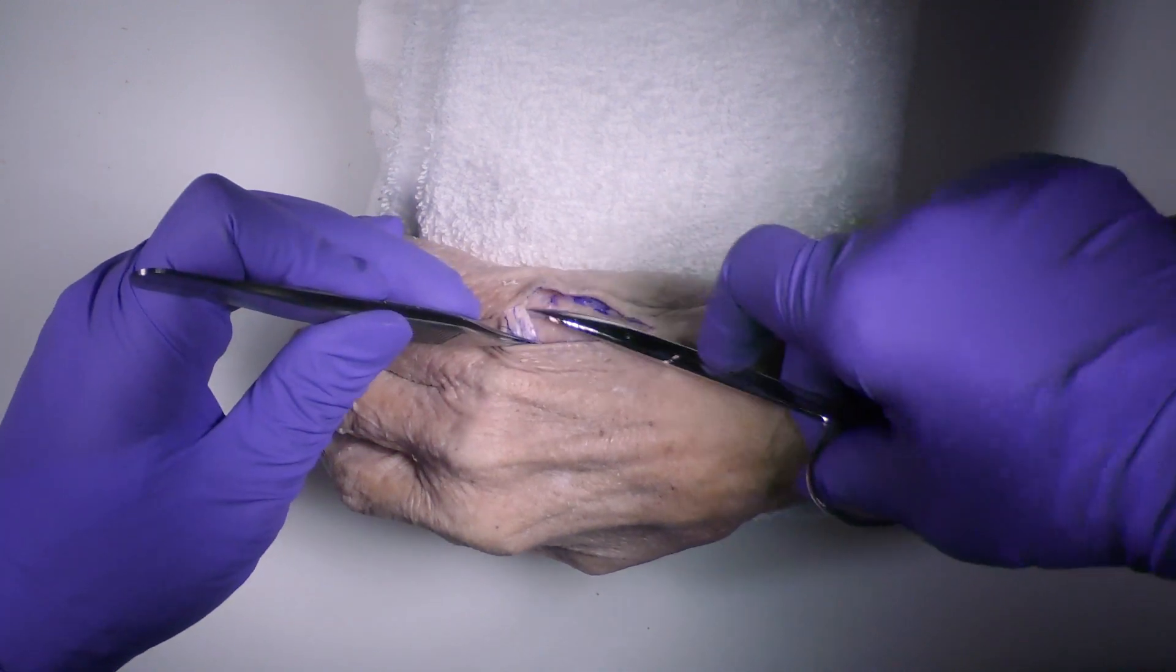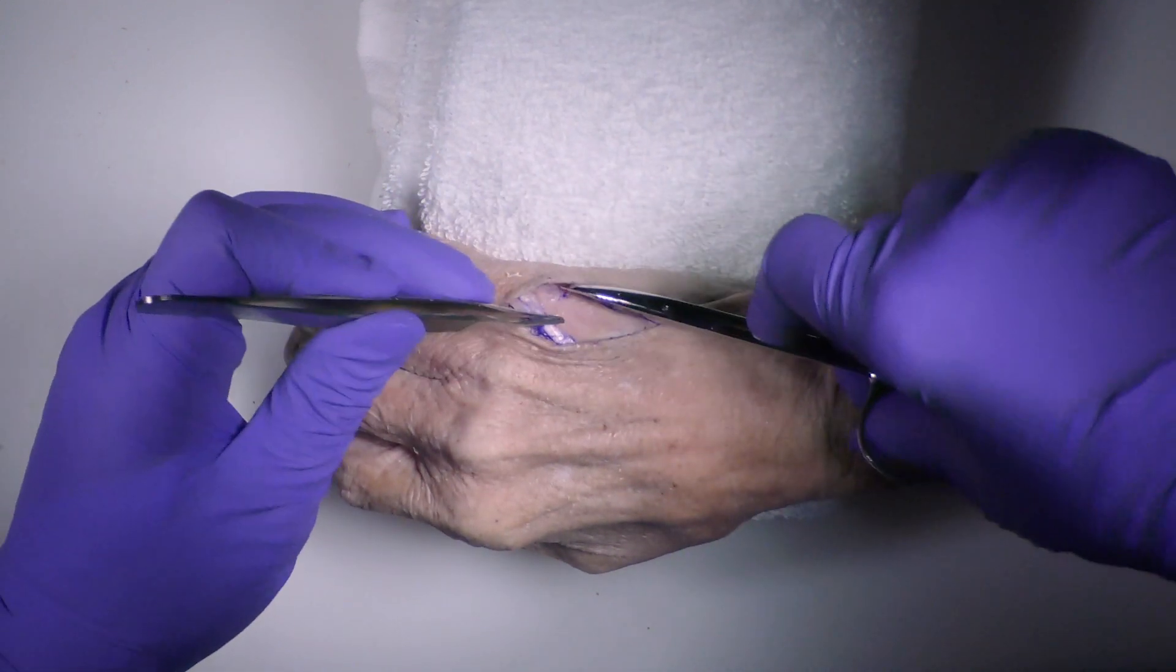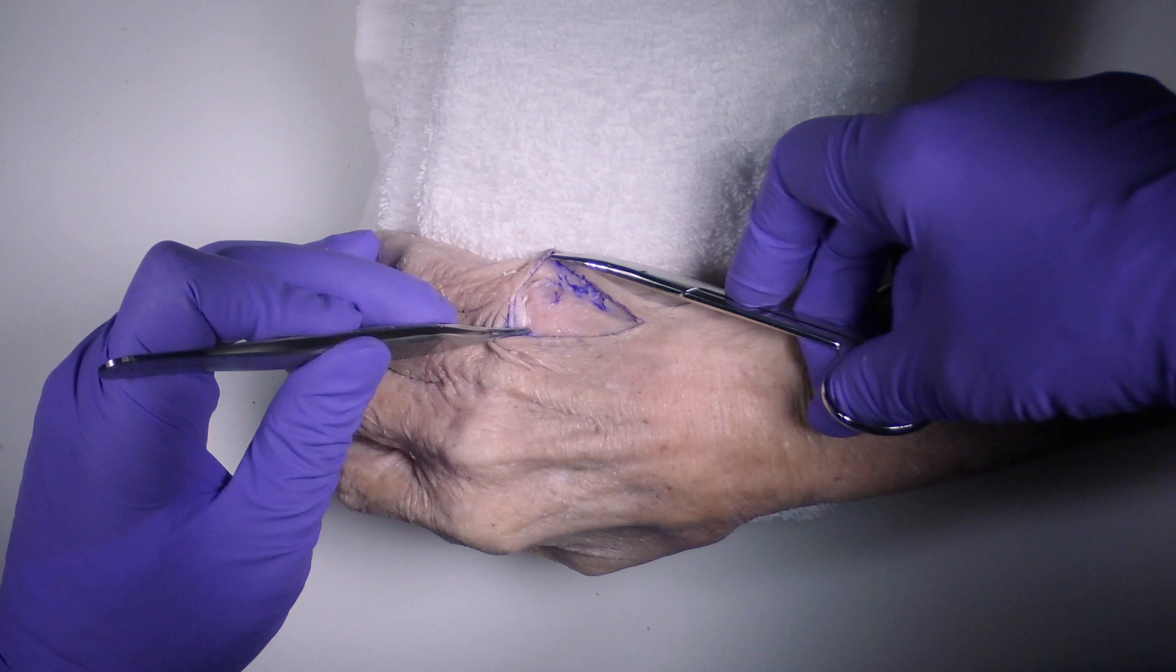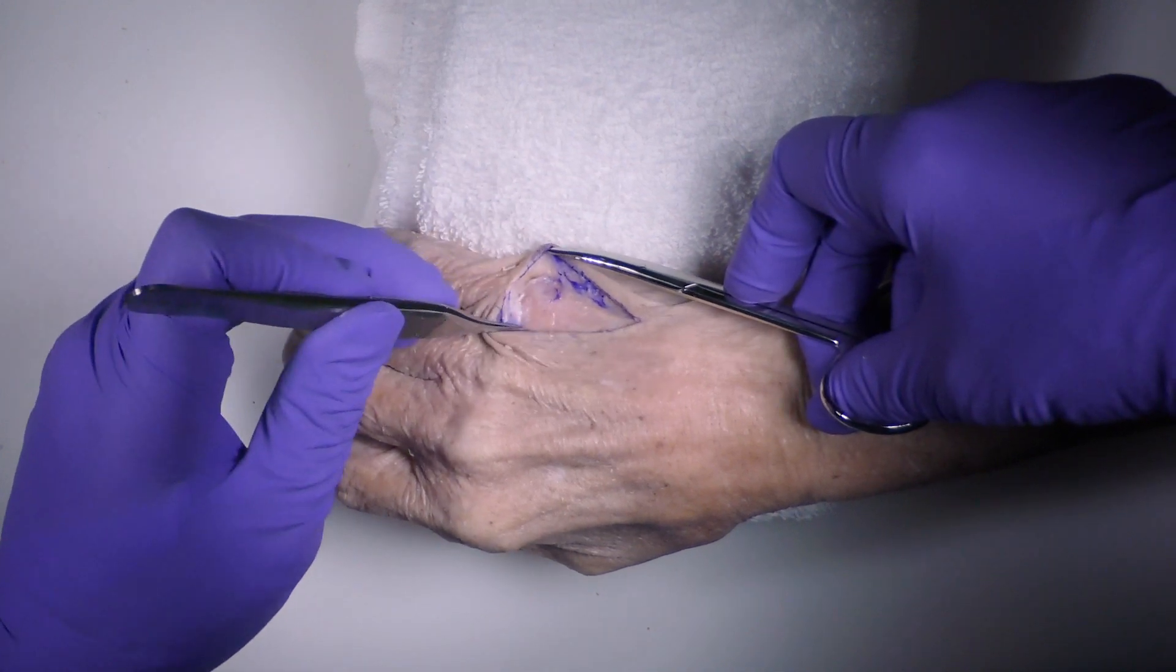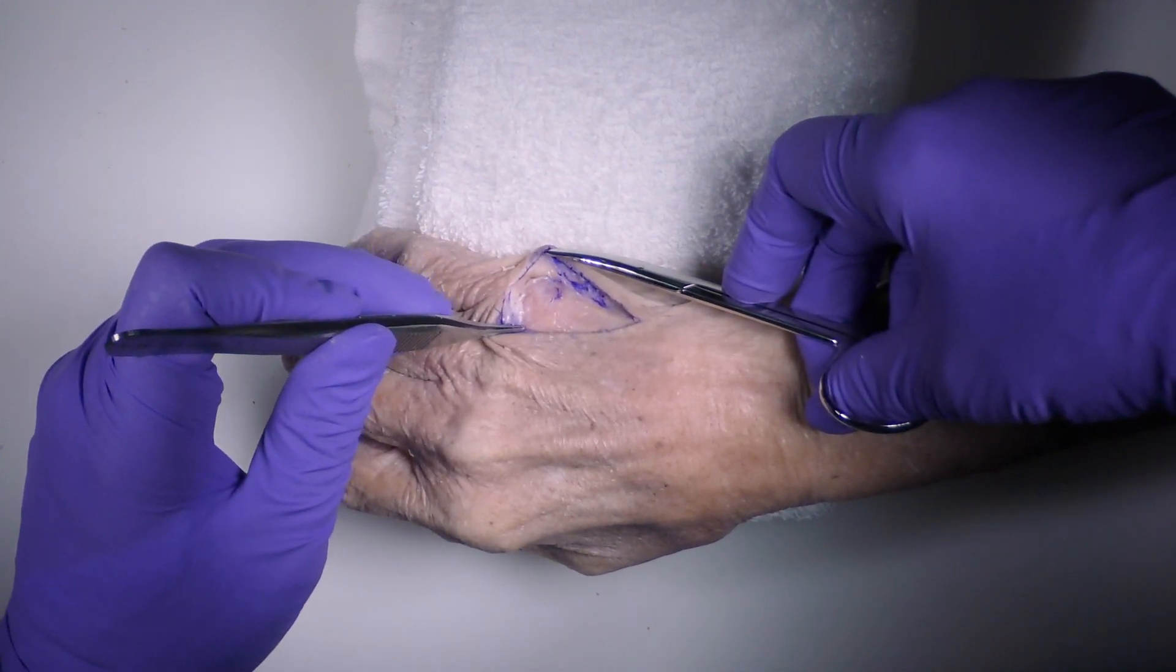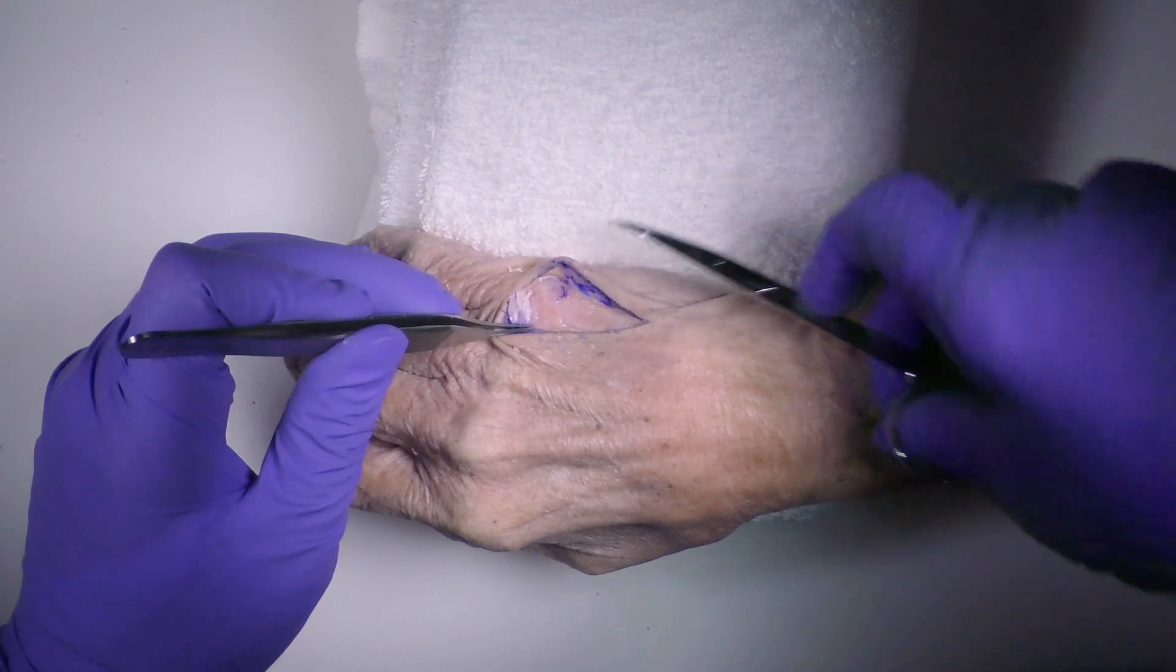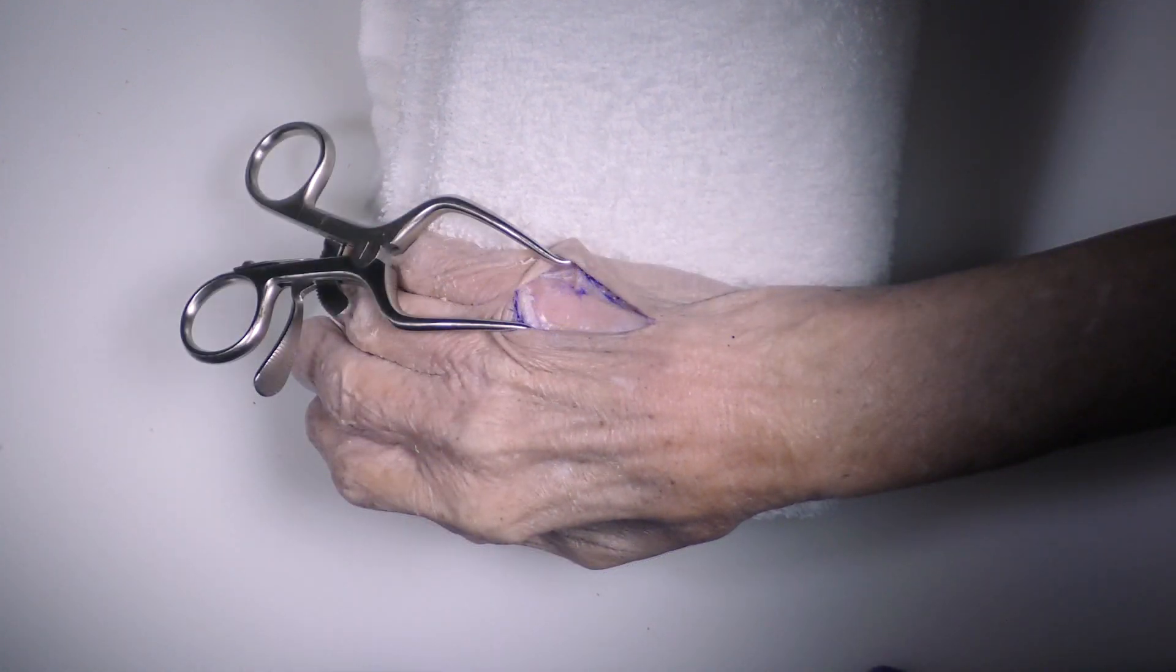So here you'll see we've got our small finger, number five, metacarpal dorsum, of which are very well exposed at this point.